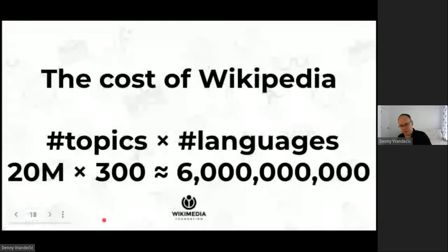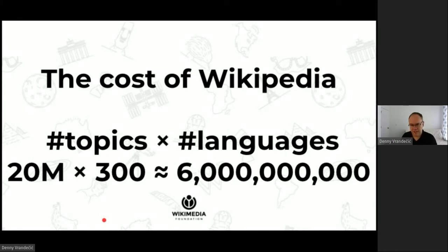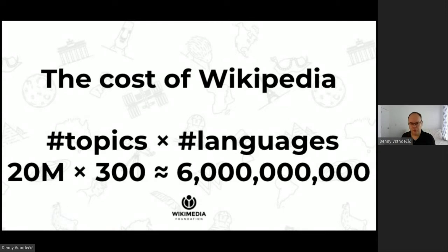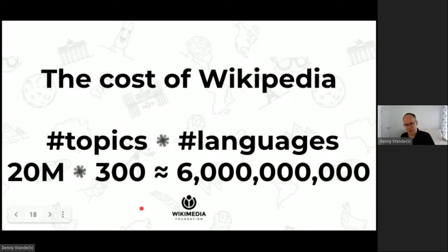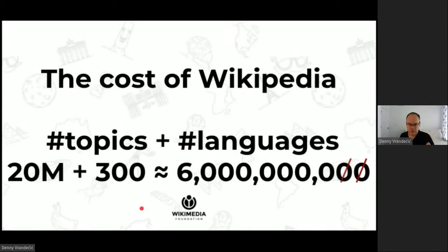The fundamental problem is that all the articles in Wikipedia are written and maintained independently in each language. This leads to the cost of Wikipedia being the number of topics we want to cover times the number of languages we want to support — a very big number. I want to show you an architecture that allows us to turn this multiplication into an addition, reducing the cost of creating and maintaining Wikipedia by two orders of magnitude.